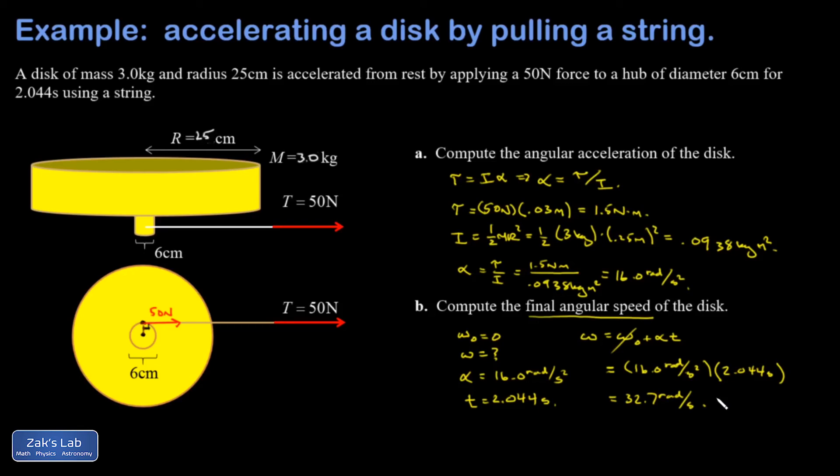Now incidentally, this same problem was solved using work and energy in a previous video. So I'll post a link to that before this one is over. In the work energy approach, we were given the distance the 50 newton force pulled for. That allowed us to compute the work. We set that equal to the kinetic energy of the disk and we were able to solve for the final angular velocity.